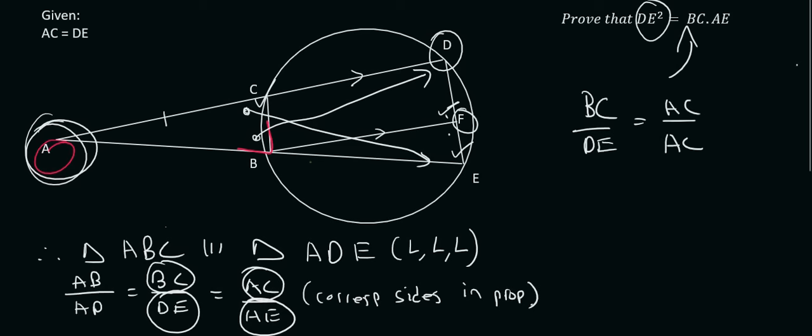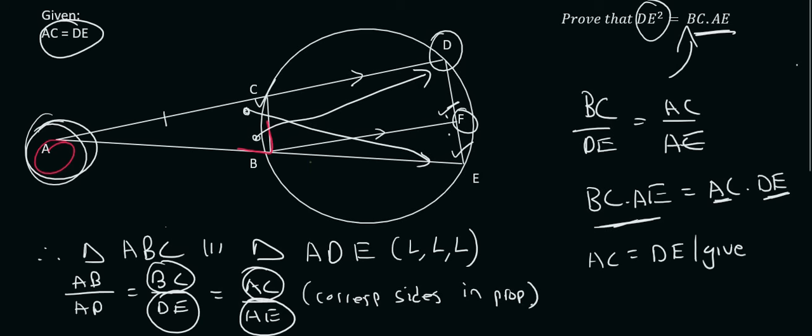We use cross multiplication, and that's going to give us BC times AE equals AC times DE. So we have this part correct, DE is okay, but then we have AC. And they love to do this in exams—they've told us that AC is the same as DE. So we can say AC is the same as DE because that was given to us.